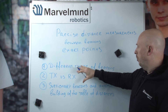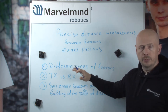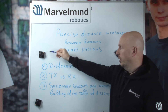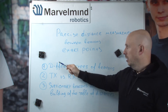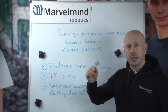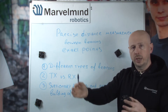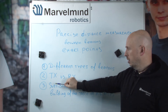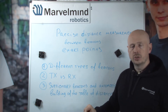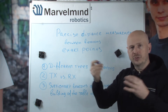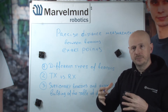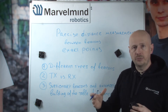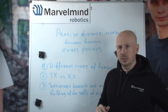I will be talking about a couple of points. First, different types of beacons, because the answer really depends on the type of beacons that you have. Then TX versus RX — transmitting ultrasound and receiving ultrasound — the point is not exactly the same. And some of the beacons support automatic table of distance building, so you don't have to measure the distance. You can simply ask the system to do it automatically. So let's do it one by one.